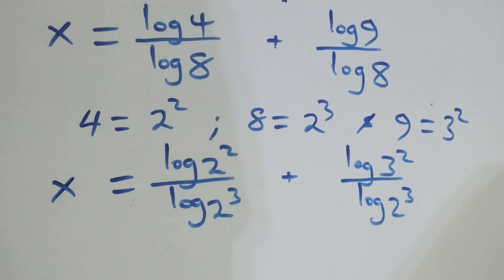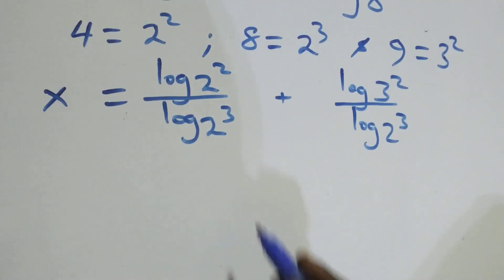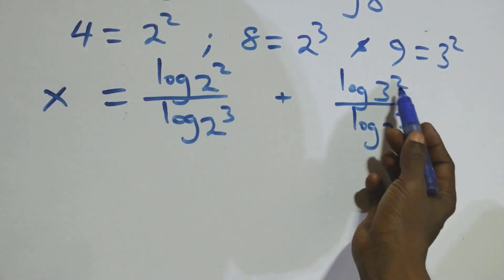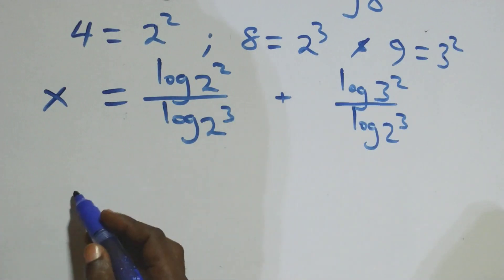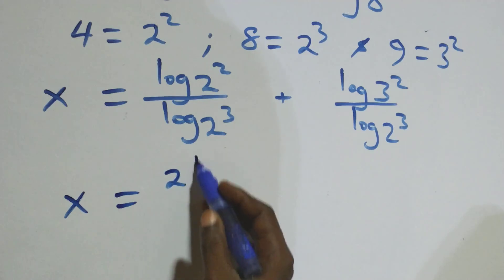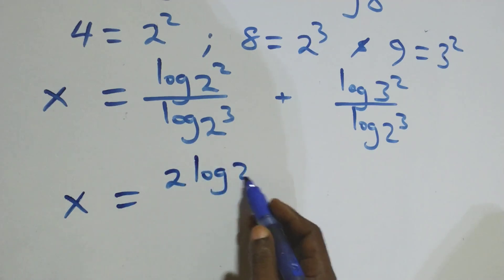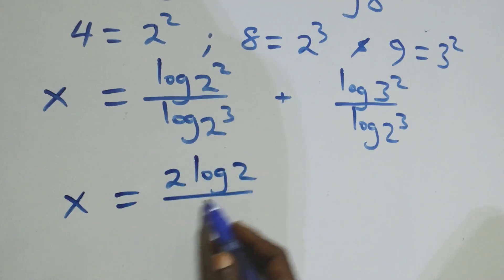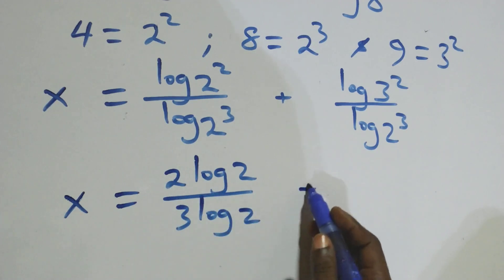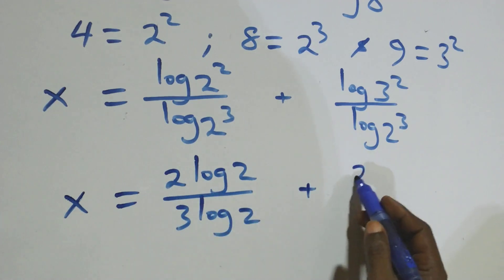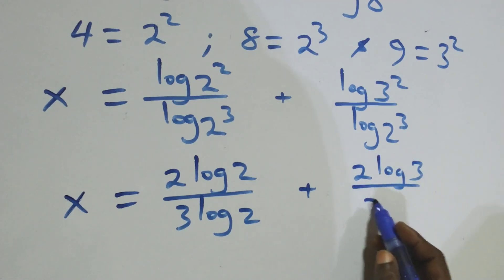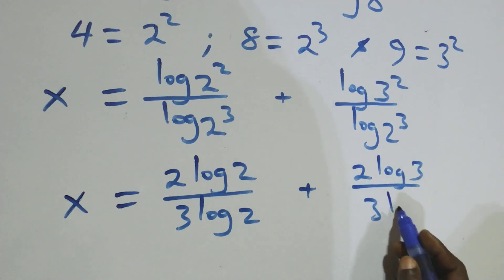The next step here, we apply the power rule of logarithms: the exponents come down in front. So we have x equals to 2 log 2 over 3 log 2, plus 2 log 3 over 3 log 2.